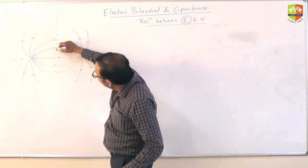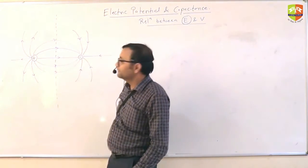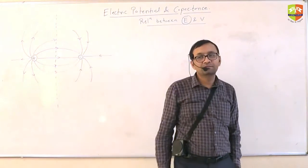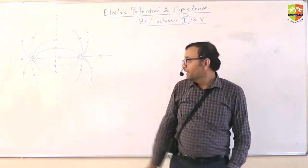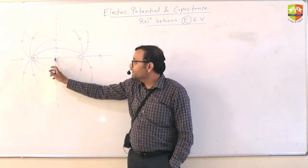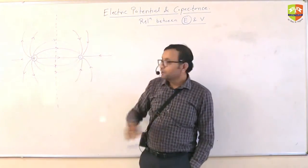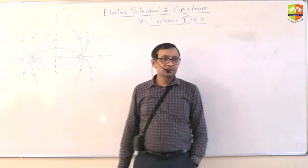So this is the equipotential surface. Can you tell me what is the potential of this line? Zero. KQ by this distance minus KQ by that distance. Zero. So throughout this line potential is zero.